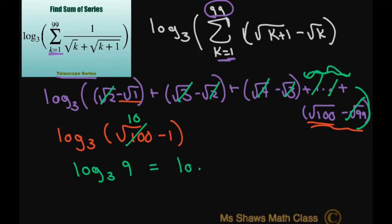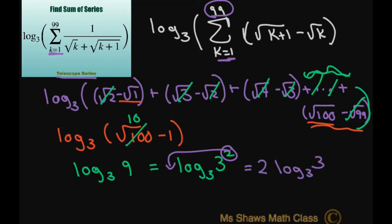I can write this as log base 3 of 3 squared. Bringing the 2 in front gives 2 times log base 3 of 3. And log base 3 of 3 is just 1. So the final sum of the series equals 2.